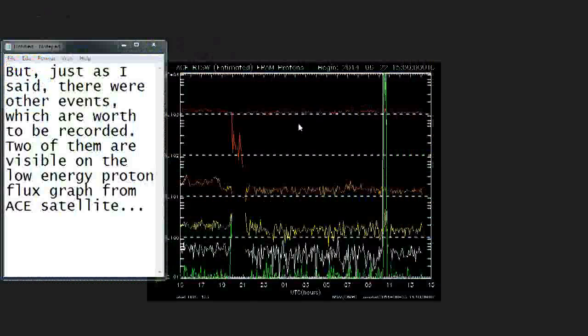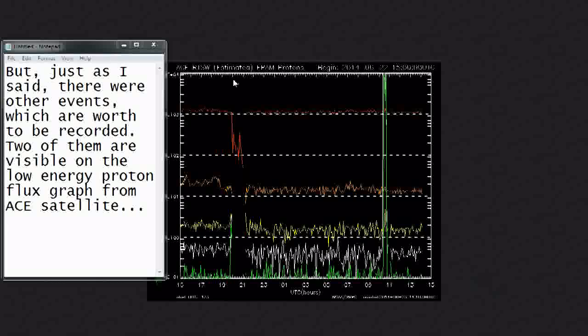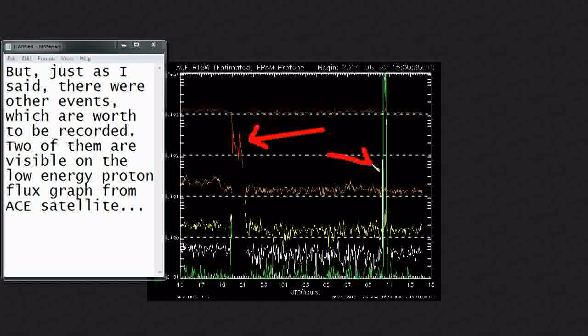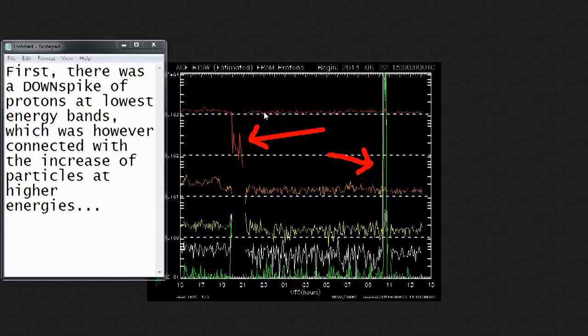But just as I said, there were other events which are worth to be recorded. Two of them are visible on the low energy proton flux graph from ACE satellite. First, there was a down spike of protons at lowest energy bands, which was however connected with the increase of particles at higher energies.